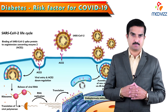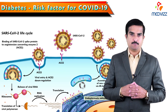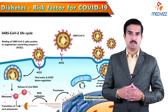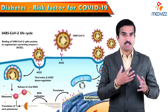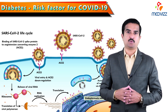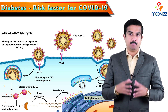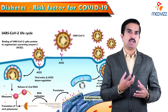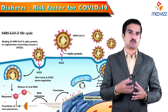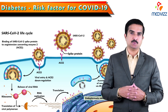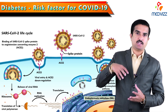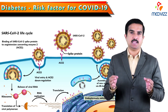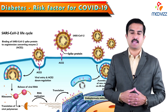SARS-CoV-2 is known to utilize the angiotensin converting enzyme 2 receptors for entry into target cells. As you can see on the screen, the picture shows very clearly that the spike proteins of SARS-CoV-2 are sitting on the receptor known as ACE2, that is angiotensin converting enzyme 2.